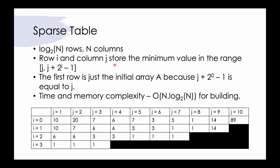Let me introduce the idea of sparse tables. Let's make a table of log n rows and n columns. For any given cell in this table, the cell stores the minimum value for 2 to the power i elements starting at that cell. So in the first row, i is equal to 0 and 2 to the power 0 is equal to 1, so the first row is just the initial array.